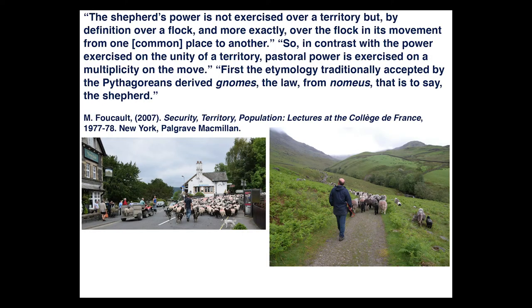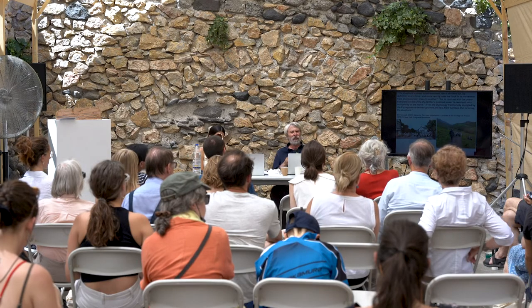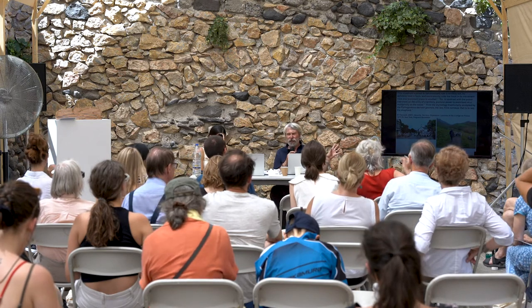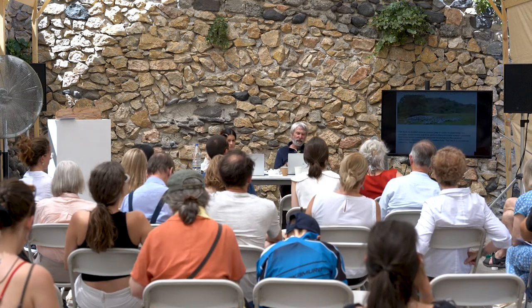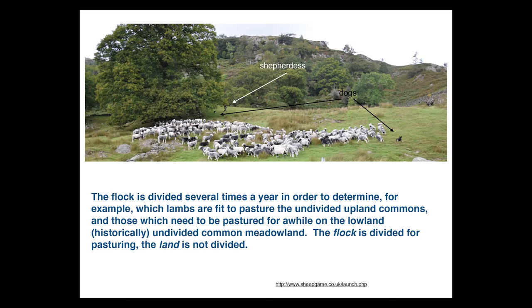Both nouns derive from the verb 'nemein' — to dispense or allot — with nomos being the result of allotment and nomos being the manner of allotment. It comes back again to herdsmen, pasture, grazing a flock. Foucault says: 'the shepherd's power is not exercised over a territory but by definition over a flock, and more exactly over the flock in its movement from one common place to another.' In contrast with power exercised on the unity of a territory, pastoral power is exercised over a multiplicity on the move. The Pythagoreans derived 'nomos,' the law, from 'nomos' — the shepherd. In churches you will see shepherds and symbols of shepherds everywhere — this isn't accidental, it was very important.